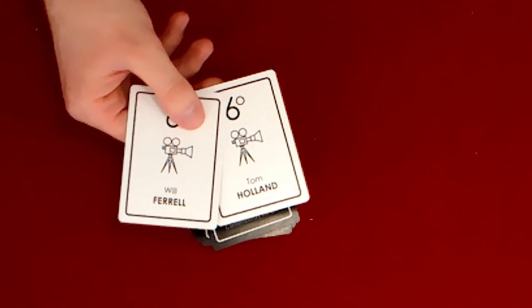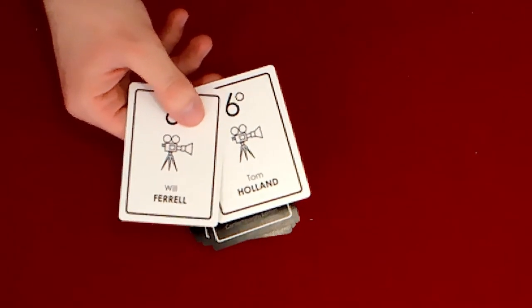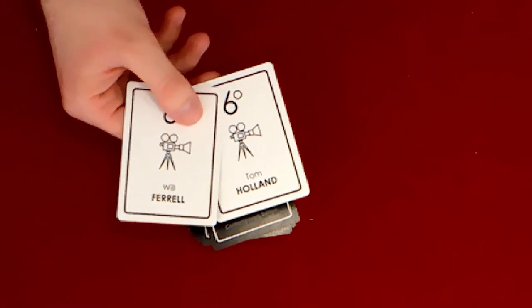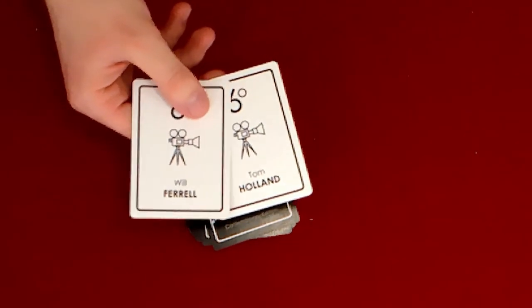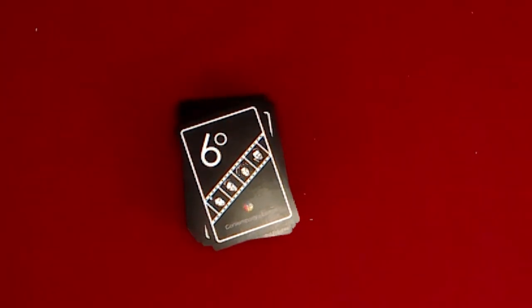For example, if I was trying to get from John Travolta to Will Smith, I may do this, resulting in six-point score.